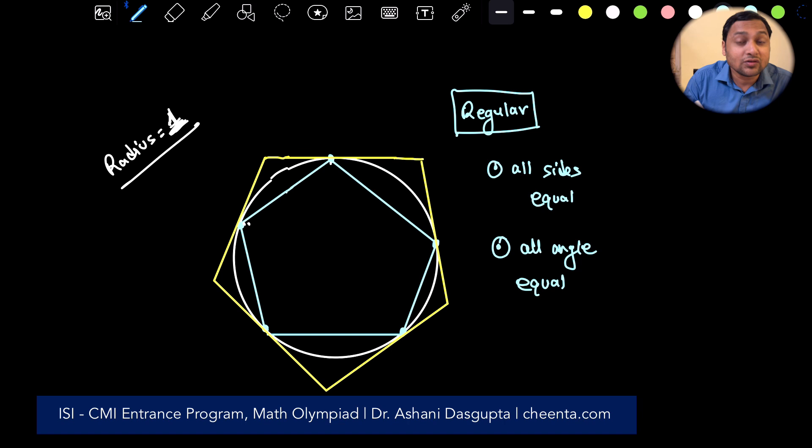Now, sometimes all sides equal would imply that all angles are equal. Example is a triangle. In a triangle, if all sides are equal, it's an equilateral triangle, so all angles would automatically be equal. But as we just saw, that's not the case for quadrilaterals.